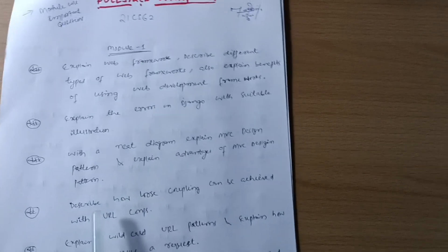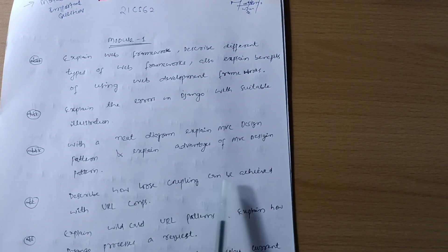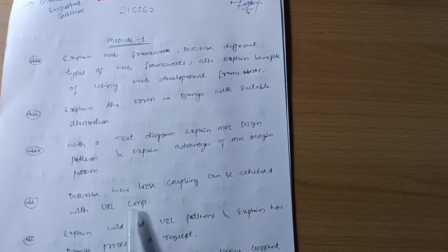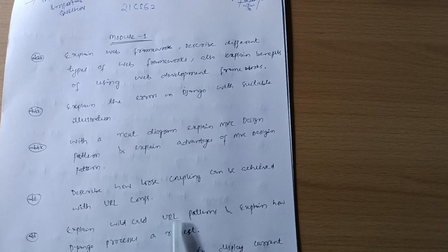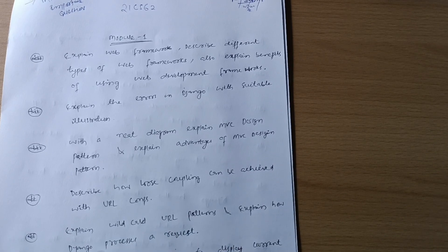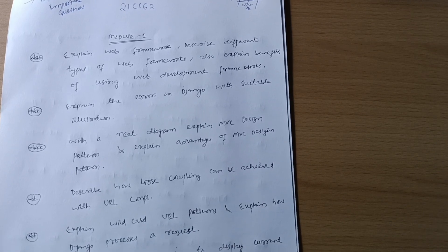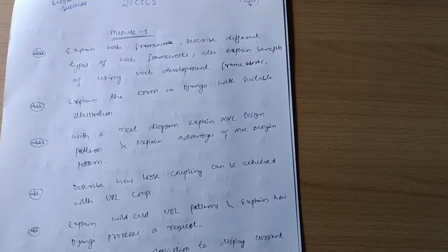Describe how loose coupling can be achieved with URL configurations. Explain wildcard URL patterns and explain how Django processes a request. Write a Django application to display current date and time, and also display current date and time with offset.